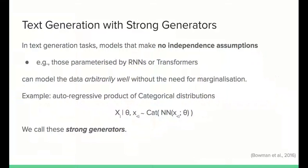In NLP, deep LVMs are particularly appealing to researchers interested in text generation, in which case most fully supervised deep models employ what we call a strong generator. A strong generator is a sampling distribution that makes no independence assumption whatsoever. Essentially every likelihood-based model parameterized by either a recurrent architecture or a transformer. These models can learn an arbitrarily expressive distribution without the need for the marginalization shown earlier.